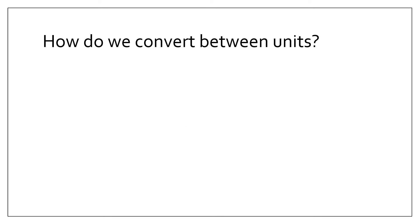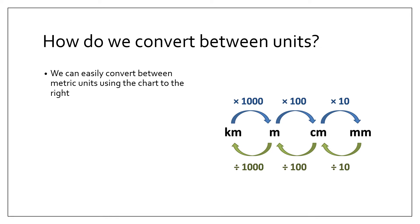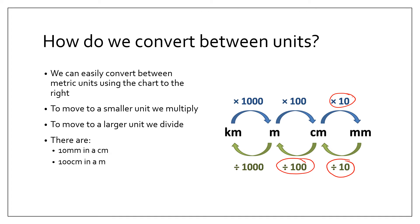How do we convert between units? We can easily convert between metric units using the chart to the right. To move to a smaller unit we multiply, and to move to a larger unit we divide. There are 10 millimeters in a centimeter, 100 centimeters in a meter, and 1000 meters in a kilometer.